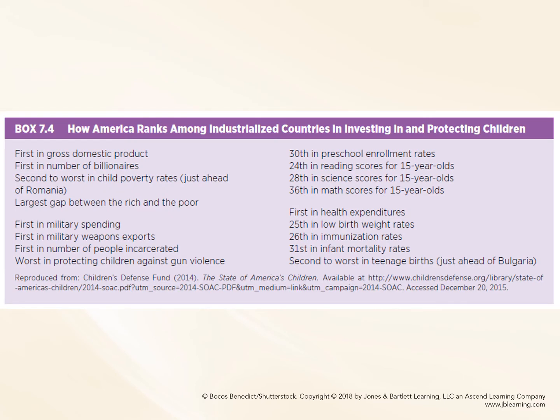Here's how America ranks among industrialized countries in investing and protecting children. We're first in gross domestic product and first in the number of billionaires, yet second to worst in child poverty rates. We have the largest gap between rich and poor, spend the most money on weapons and military, and are first in the number of people incarcerated. We're the worst in protecting children against gun violence, 30th in preschool enrollment rates, 24th in reading scores for 15-year-olds, 28th in science scores, and 36th in math scores. We spend the most money on health, yet rank 25th in low birth weight rates, 26th in immunization rates, 31st in infant mortality rates, and second to worst in teenage births.